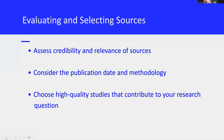Evaluating and selecting the right sources is another important step. Evaluate the credibility of each source by considering the author's qualifications, the publication's reputation, and the study's peer review status. Ensure that the sources are relevant to your research question and contribute meaningfully to your review. Look at the publication date to ensure that the research is current, and assess the methodology used in the studies to determine their rigor and reliability. By carefully evaluating and selecting your sources, you ensure that your literature review is built on a solid foundation of credible and relevant research.